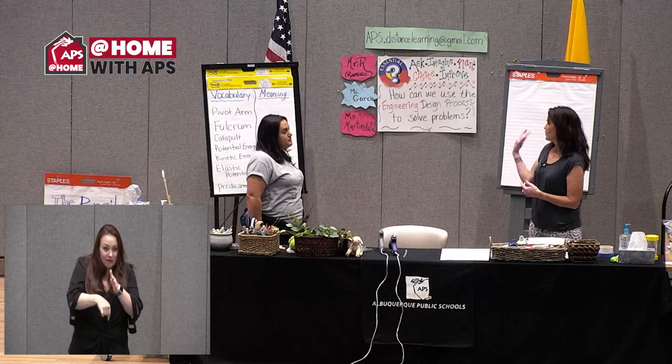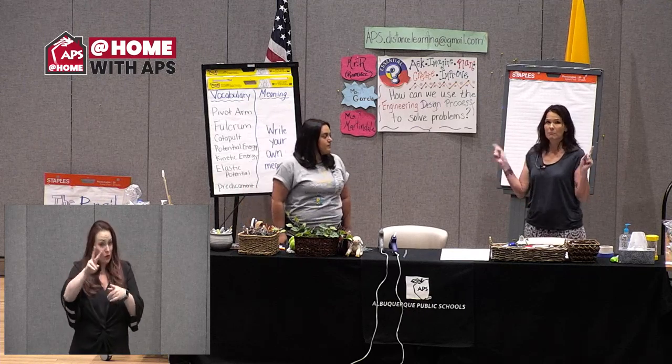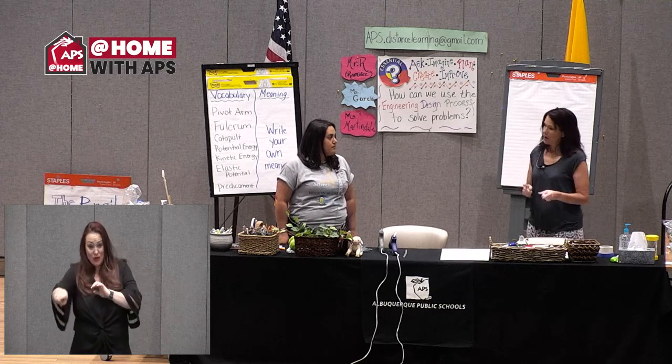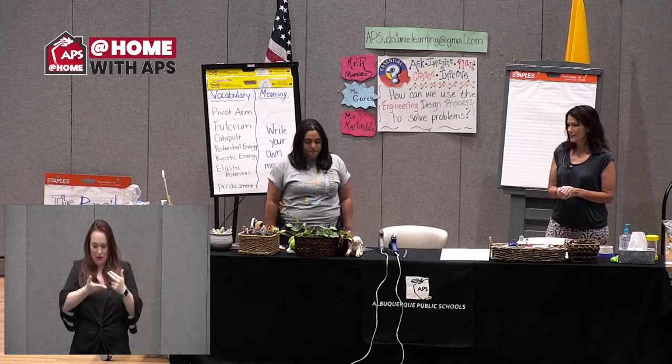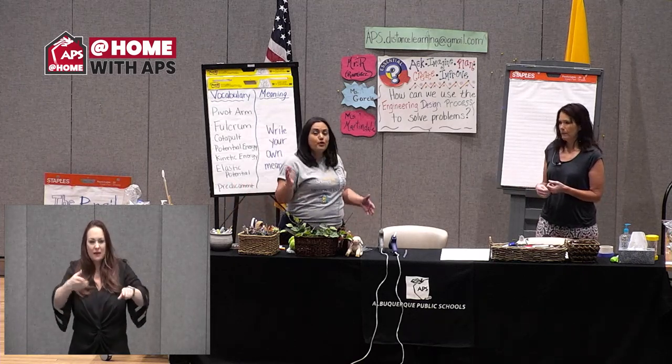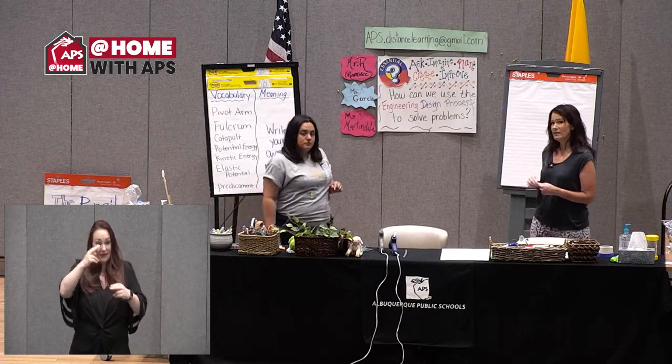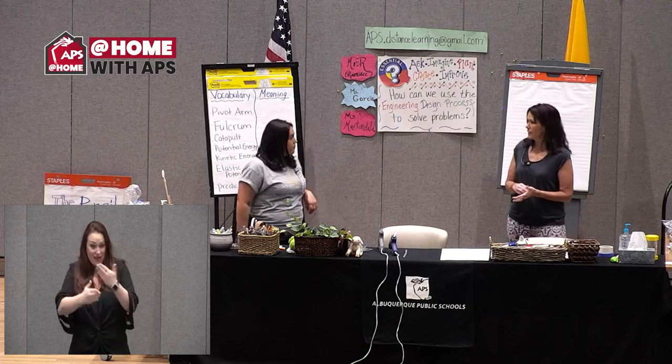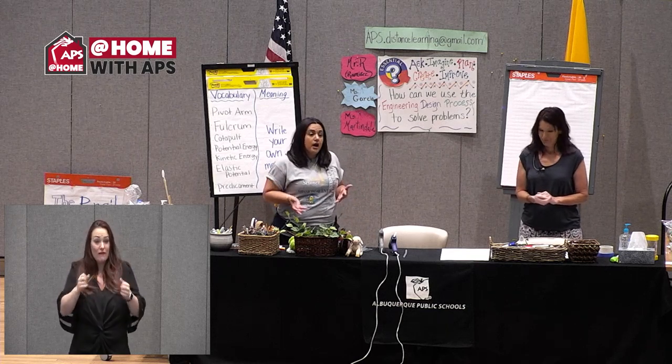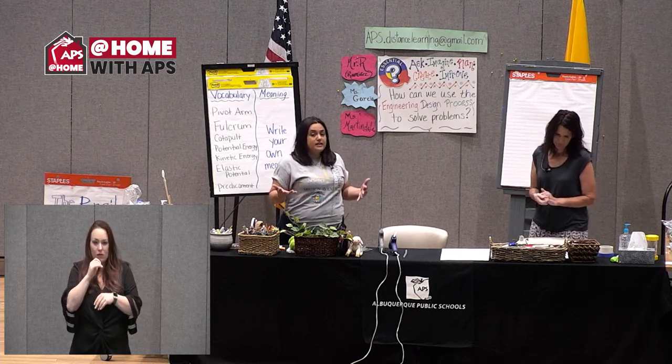We're going to need our two column notes for your vocabulary and the meaning that you come up with. We're going to need some building materials — random stuff that you find around the house. We don't want to spoil the surprise just yet, but you will be creating, using your magnificent mind and building something. We'll be using the design process as well. So sticks and rubber bands are really good for this. Tape, rulers, balloons — anything you can find around the house that you have permission to use.